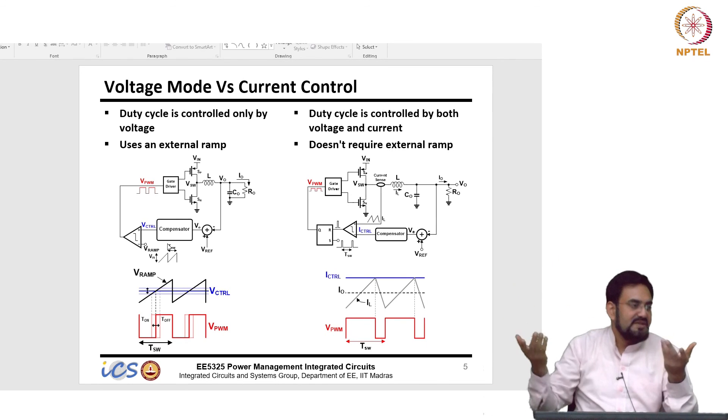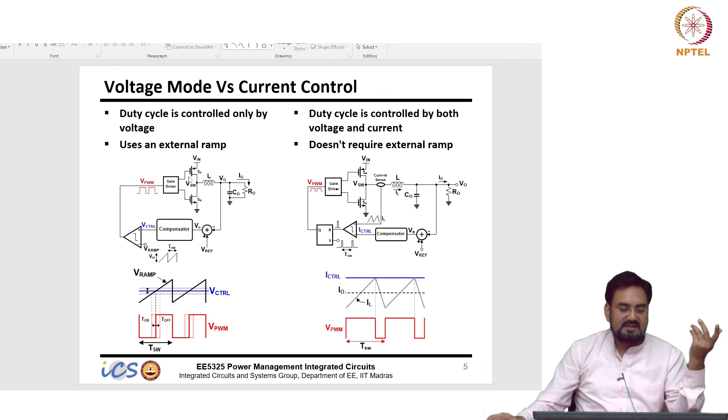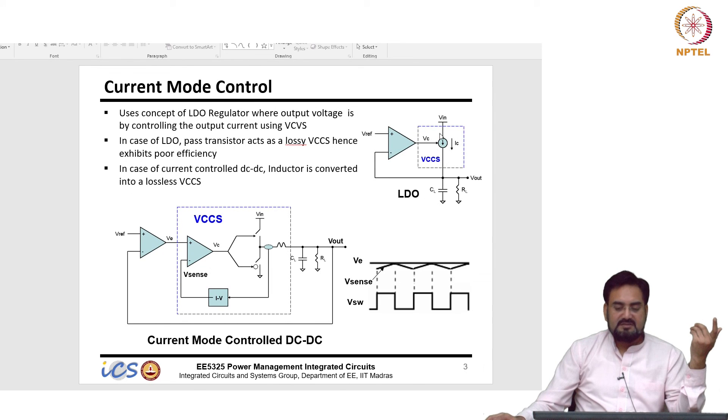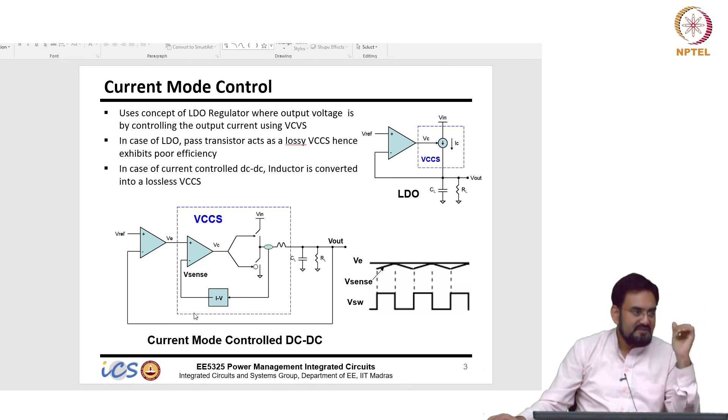And the moment it starts behaving like a voltage mode control that means, you are not able to limit the current. And if I am not limiting the current then this inductor will not behave like a VCCS. Now, it will get replaced again by the same inductor and you will start having this LC pole resonance everything and you need a type 3 in that phase. So, that is why we need to avoid that condition when you are designing current mode control.